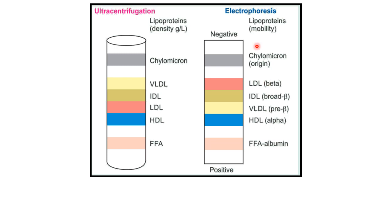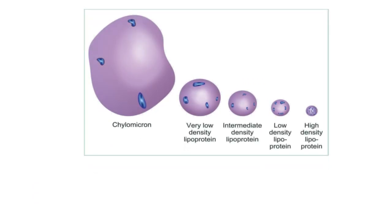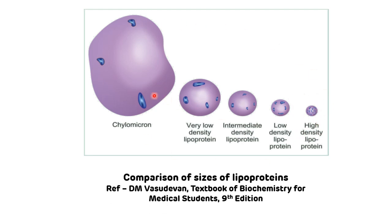This picture shows the separation of lipoproteins in electrophoresis from negative (cathode) to positive. This picture also shows the comparative size of lipoproteins — chylomicron is the biggest among all lipoproteins and HDL is the smallest.